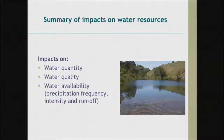In terms of impacts on water resources, there are three main ones. First, water quantity — it is often said that in the future, dry places will get drier and wet places will get wetter. Second, water quality — too little water in a river means pollutants will be more concentrated, while too much runoff means more pollutants get washed in. Third, water availability — the frequency and intensity of rainfall and associated runoff will change. Some countries may find they have the same annual rainfall, but if all of it comes in one day, it creates certain problems.